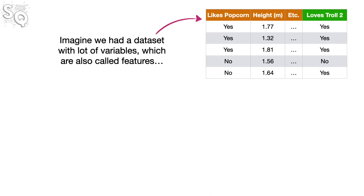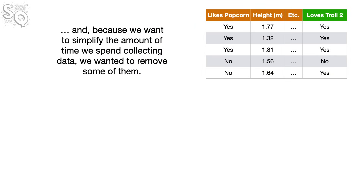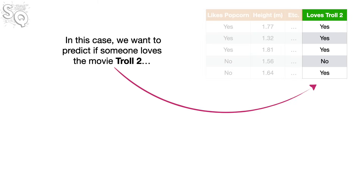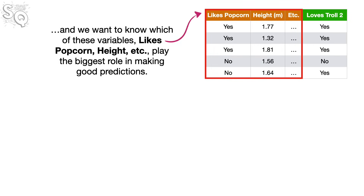Imagine we had a data set with a lot of variables, which are also called features. Because we want to simplify the amount of time we spend collecting data, we wanted to remove some of them. We want to predict if someone loves the movie Troll 2, and we want to know which variables — likes popcorn, height, etc. — play the biggest role in making good predictions.